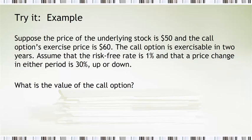Now let's think of another option. So let's see, suppose we have a price of the underlying 50. So that's today's price. The exercise price, or strike price, is 60 on the option. The call option is exercisable in two years. Assume that the risk-free rate is 1%, and the price change in either period is 30% up or down. So instead of the 60 and 40 that we had before, we now have 30% up or down.